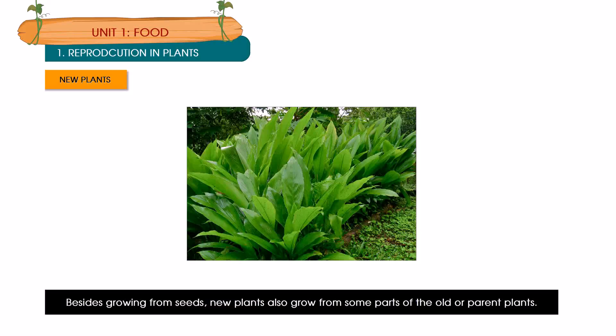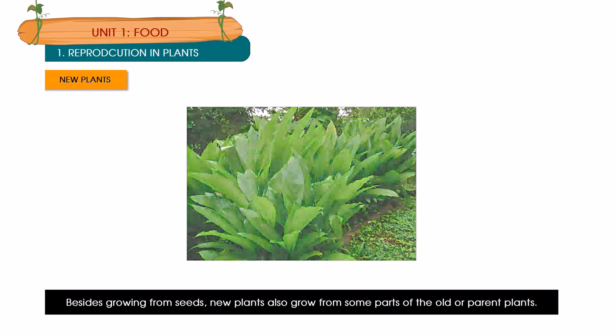New plants: besides growing from seeds, new plants also grow from some part of the old or parent plant. Some plants grow from cuttings. Gardeners often cut off a piece of the stem of a hibiscus plant and put it into the ground. Roots grow and new leaves sprout from it. The stem becomes a new plant.